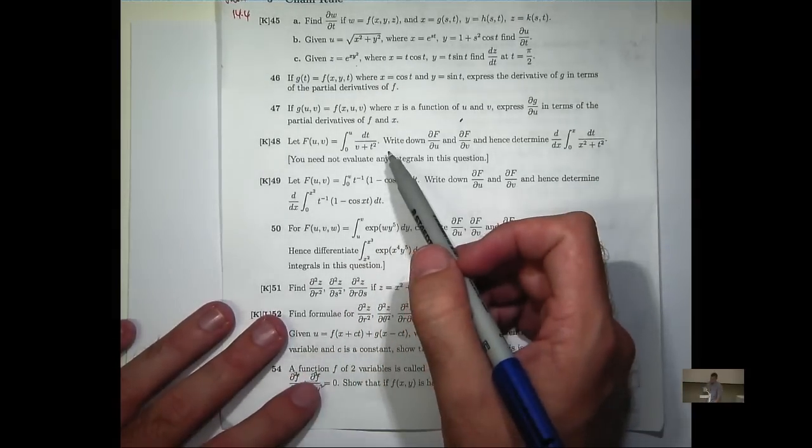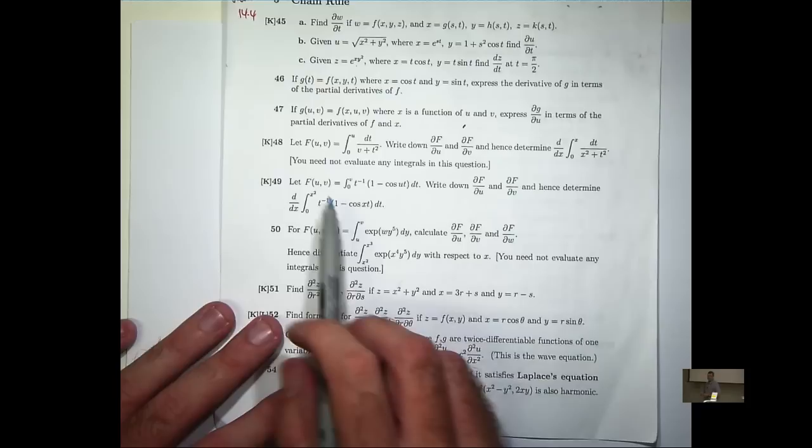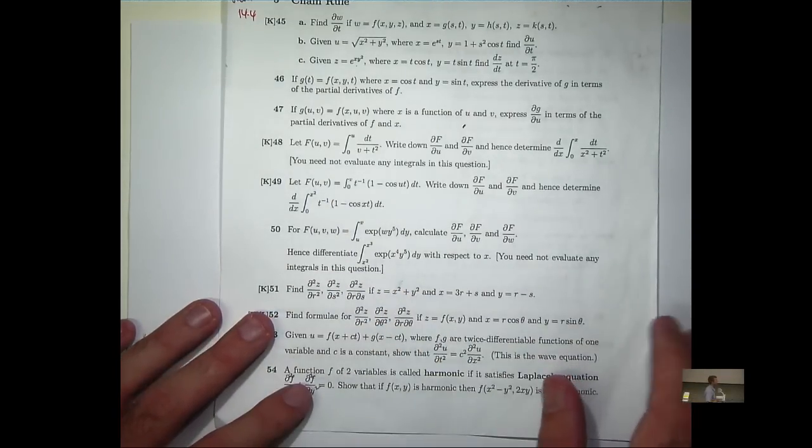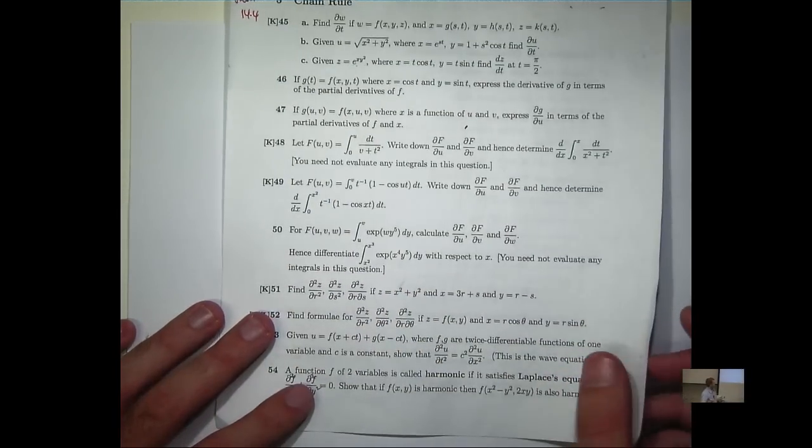49 is basically just a repetition of 48, but with a different big F. Let's look at 49.